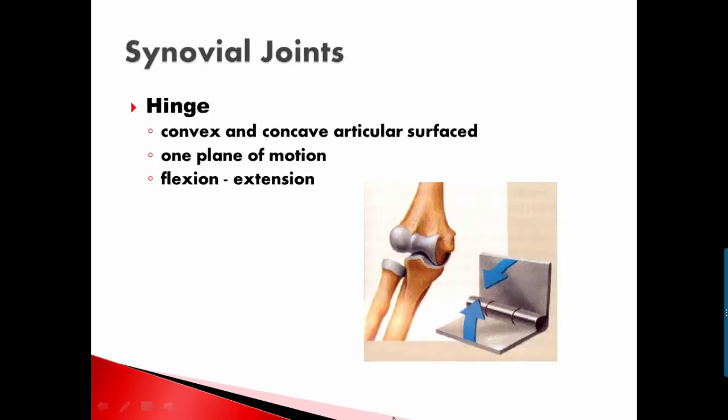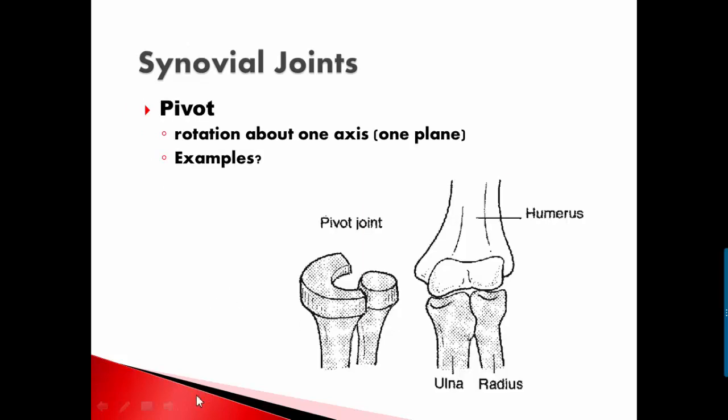Second type of synovial joint is the hinge joint. So you have a convex and a concave surface, one plane of motion again, and it's typically flexion and extension. And so here we have the hinge joint of the elbow joint, of the humerus on the ulna. Another hinge joint is obviously our knee joint.